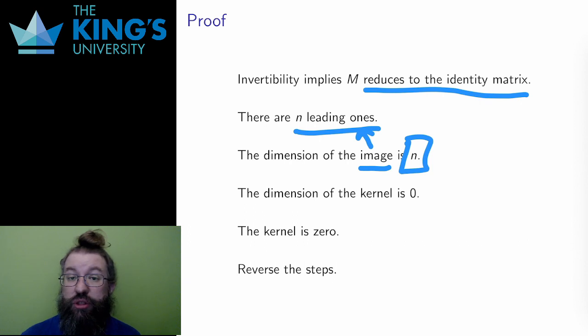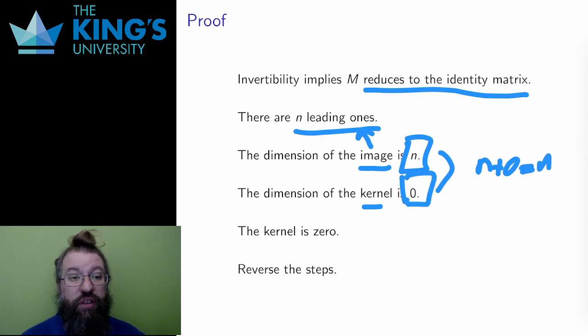Well, then I can use the previous result that I just proved earlier in this video. The dimension of the image and the dimension of the kernel add up to n. Here, the image is already dimension n, so the dimension of the kernel must be zero to make this work. So the kernel has dimension zero, which means that the kernel is just a point, and the only point it can be is the zero vector. So the kernel is just the zero vector.